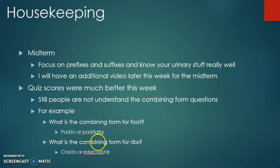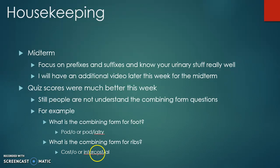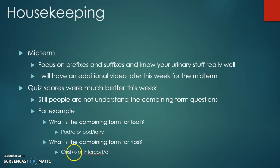What is the combining form for ribs — costo or intercostal? Even though you're using the combining form, intercostal is a complete term. It has a prefix and a suffix. What they're looking for is costo slash o — that is the combining form.